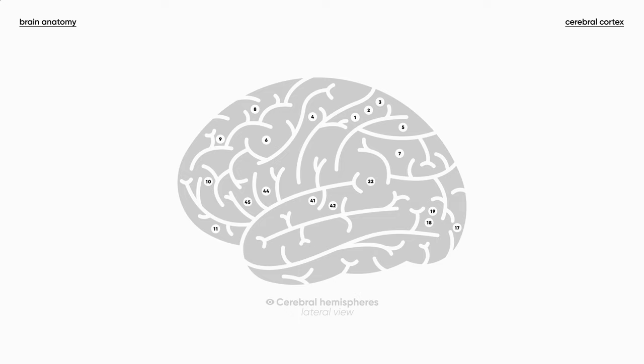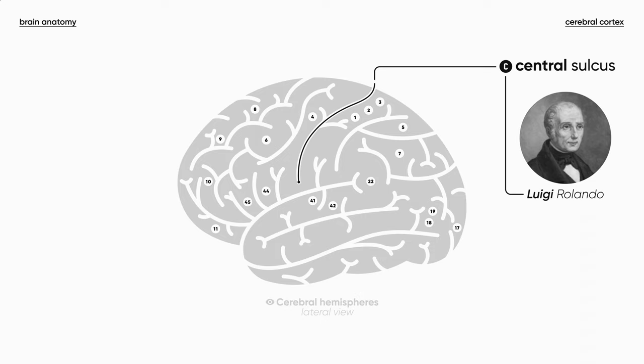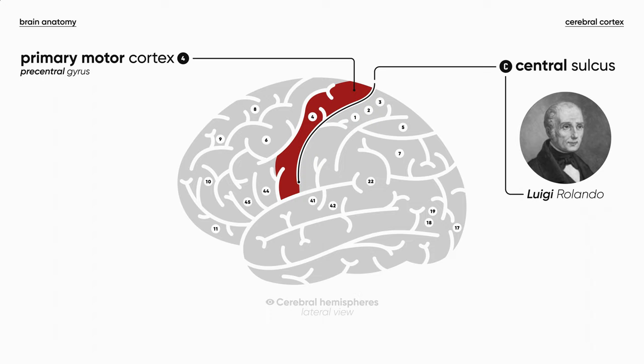As a reminder, each of the cerebral hemispheres has this central sulcus, also known as the fissure of Rolando, between the frontal and parietal lobes. So anteriorly to this sulcus, we have the precentral gyrus.